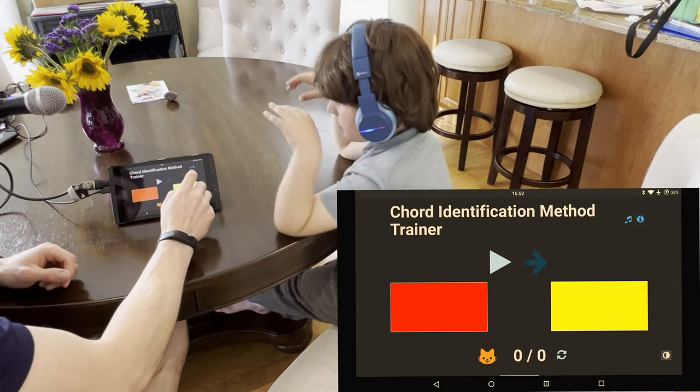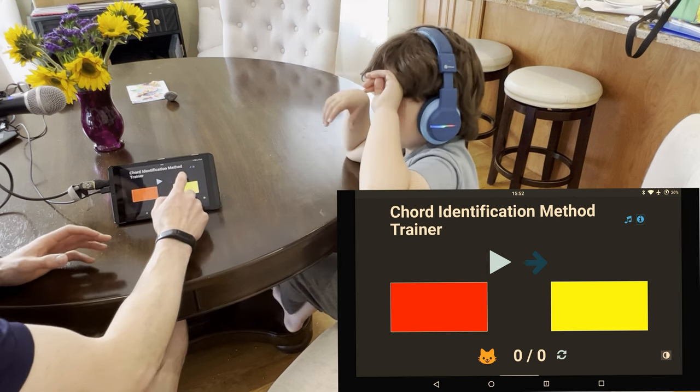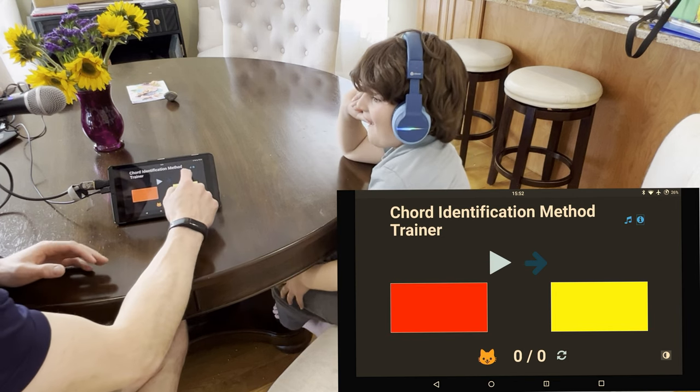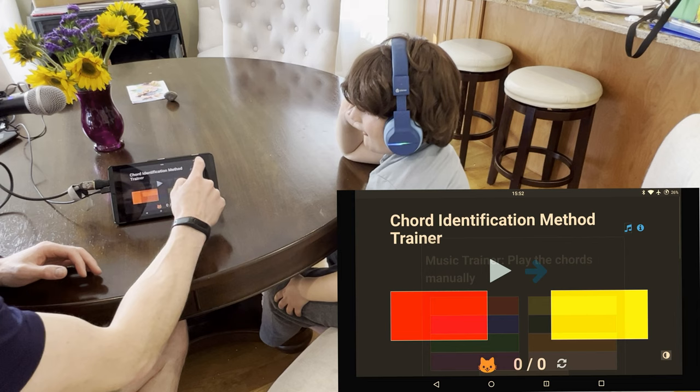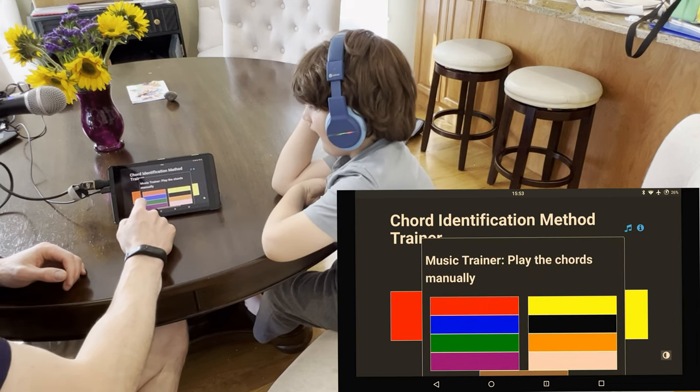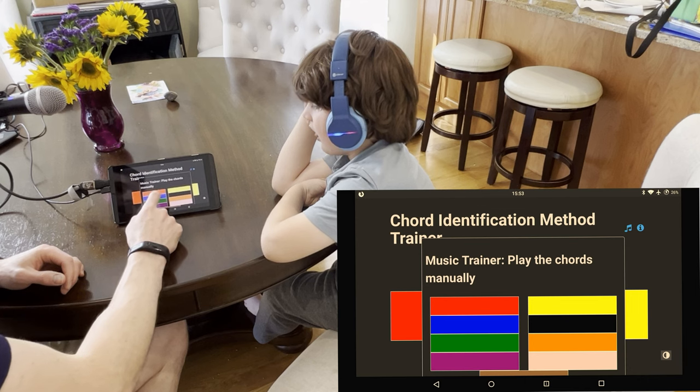The idea is that in each session you're going to do something like this. So first you start by playing the chords for the child. So Max, first you're going to hear the red chord. That's the red chord. And then the red chord again.